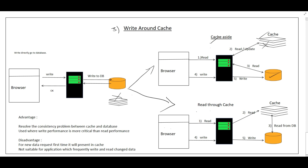With Read Through Cache combined with Write Around: the browser sends a write request to the application server which writes directly to the database. When a read request comes, it reads through the cache — if the cache has the data it returns it; if not, it reads from the DB, updates the cache, and returns to the browser. The advantage of Write Around Cache is data consistency between cache and database, and it is used where write performance is more critical than read performance.